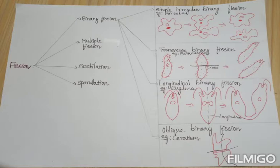Depending on the plane of division, binary fission is divided into four types. They are simple irregular binary fission, transverse binary fission, longitudinal binary fission, and oblique binary fission.